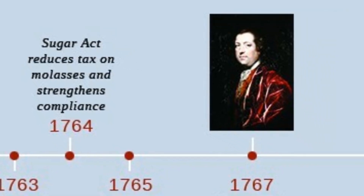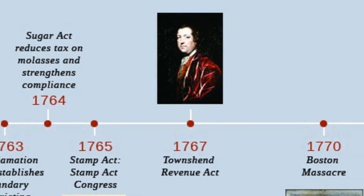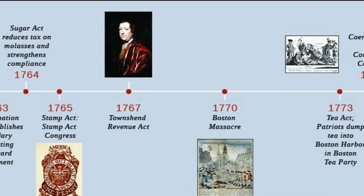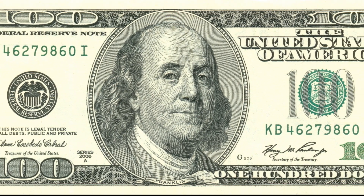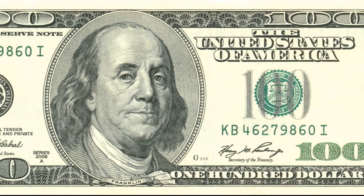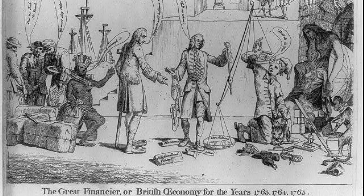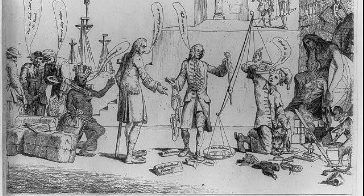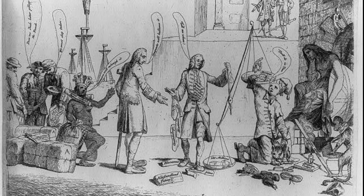1764, the Sugar Act is passed by the British Parliament, introducing taxes on sugar and other goods. The Currency Act is passed by the British Parliament, prohibiting the use of paper money in the American colonies. The Quartering Act is passed by the British Parliament, requiring American colonists to provide housing and food for British soldiers.